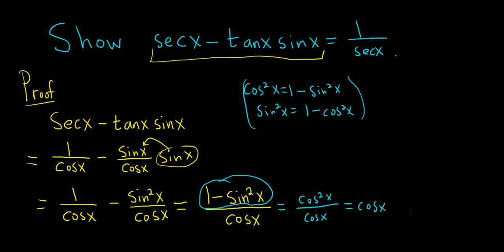But cosine equals 1 over secant, and that's what we wanted to show. That completes the proof.